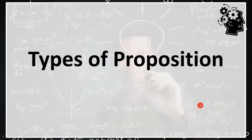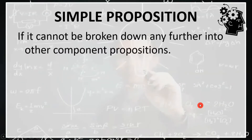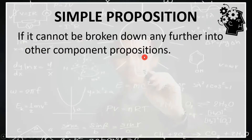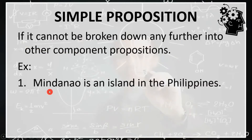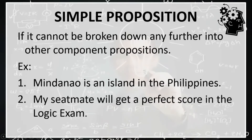A proposition has two types. First, simple proposition. A proposition is considered to be simple if it cannot be broken down any further into other component propositions. For example: Mindanao is an island in the Philippines; my seatmate will get a perfect score in the logic exam. This proposition is considered simple because it expresses a single thought, is not composed of any other propositions, and just like a simple sentence, it only has one subject and one predicate.